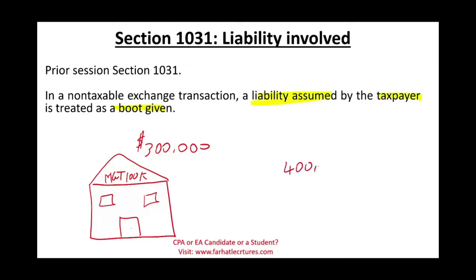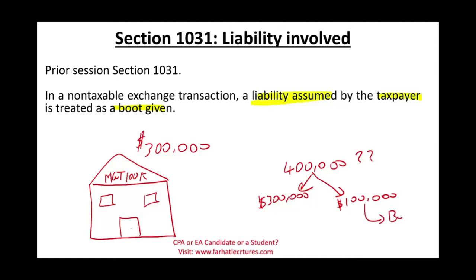So how much did you really pay for the house? Well, you technically paid $400,000 — you paid me cash $300,000 and you took over my liability. I'm no longer responsible for that $100,000. It is as if you gave me $100,000. All that happened is you took over my mortgage, and that $100,000 liability assumed by you is a boot to me.